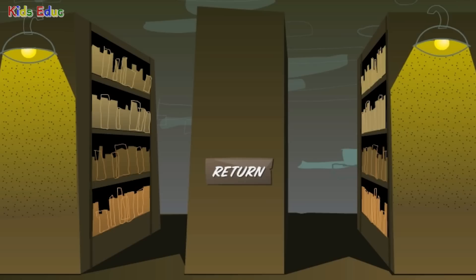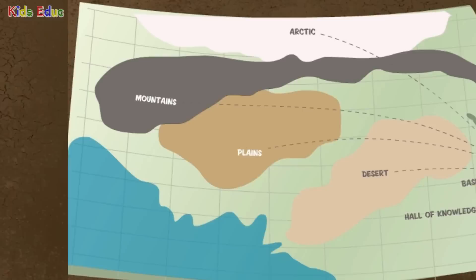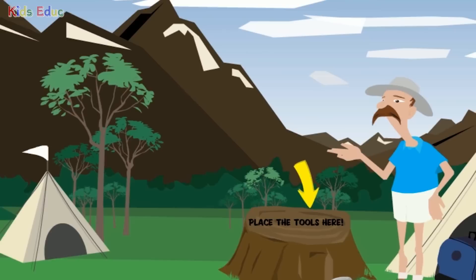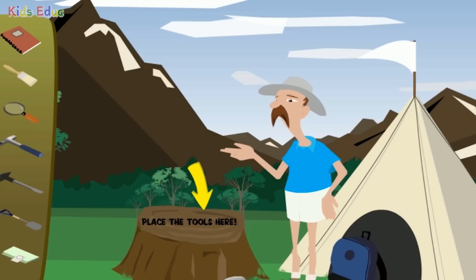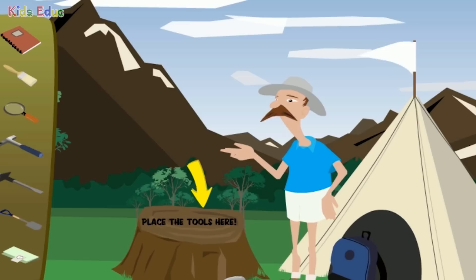Now that you've learned about fossils, you can head toward Base Camp to learn about the gear you'll take into the field. Welcome to Base Camp. Here you'll learn about the tools needed to find your fossils. Finding fossils is sometimes hard work. Many fossils are inside rocks or deep underground. Because of this, paleontologists need special tools to dig them up and study them. To learn more about the tools paleontologists use, click and drag each of the tools you see at the left of the screen over to the tree stump.